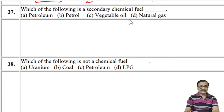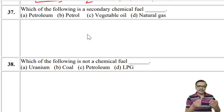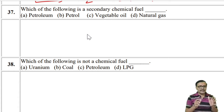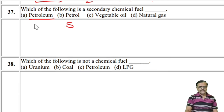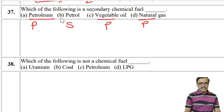Which of the following is a secondary chemical fuel? Primary fuels are natural fuels; secondary fuels are derived fuels. Petroleum is a primary fuel; petrol is a secondary fuel. Vegetable oil and natural gas are primary fuels. So secondary fuel is petrol.